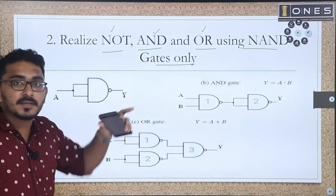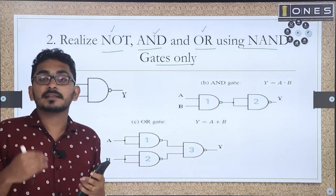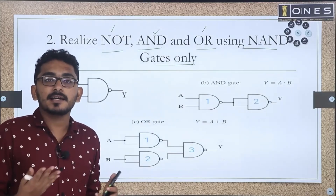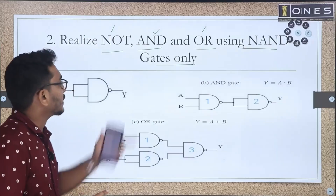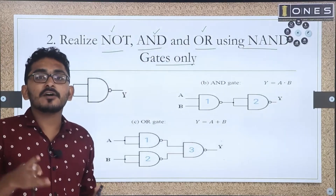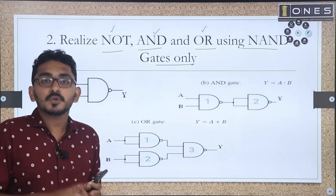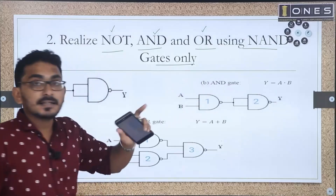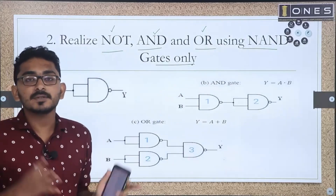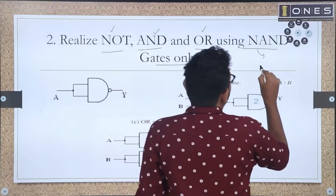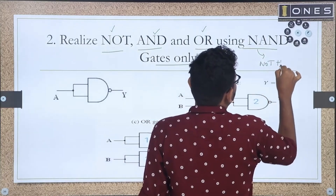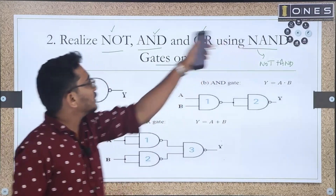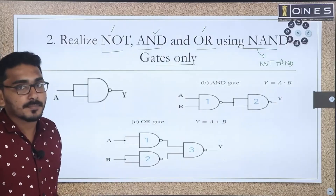An OR gate outputs high when any input is high. A NAND gate is NOT combined with AND — that is, it performs AND then complements the output. Using NAND gates, we can realize NOT, AND, and OR gates.